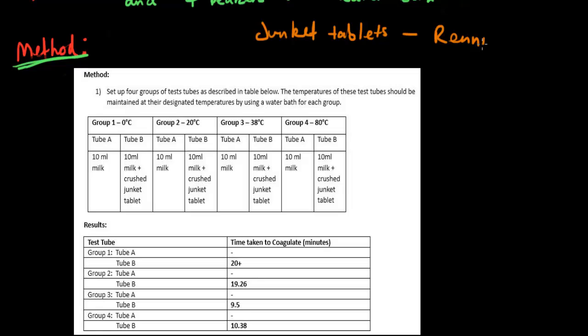After preparing these four groups of beakers with test tubes inside, we regulate the temperature of the water baths at the required levels. Then we time how long it takes for the milk to coagulate. The 10ml milk by itself acts as a control to see how long it would take without renin.